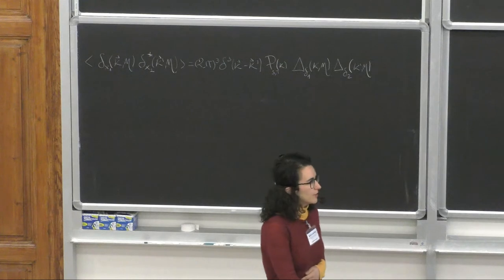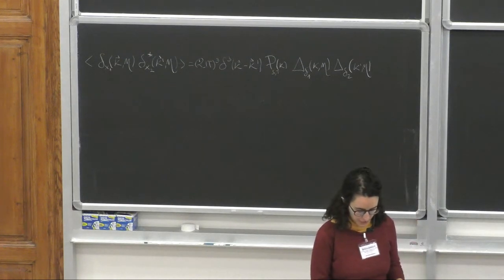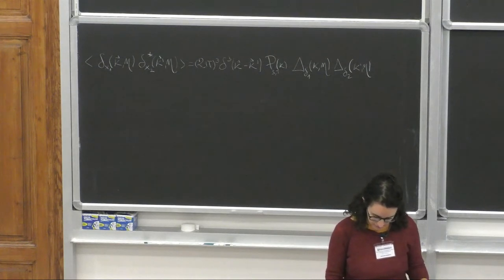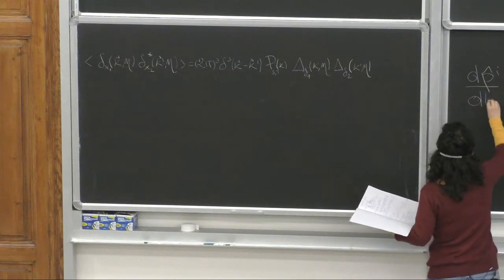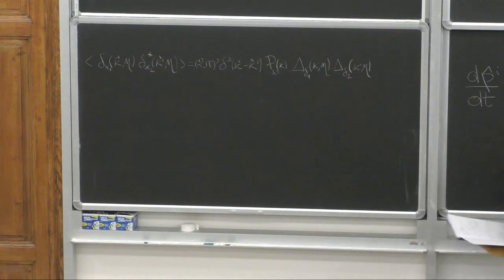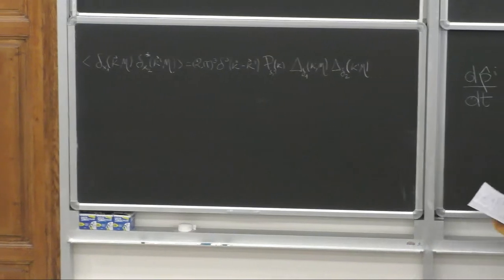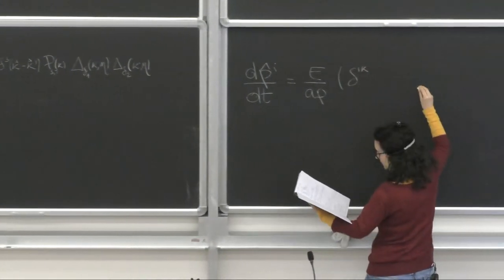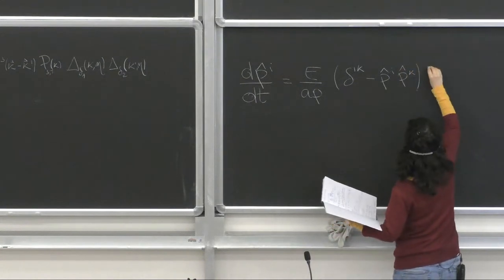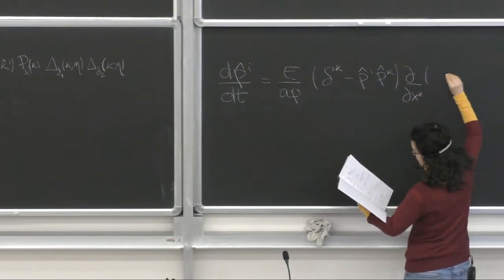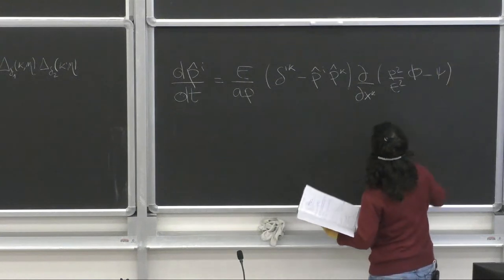Before we get started, let me go back to two things that arose yesterday. One was a question concerning the index of the term dpi_e over dt. As someone pointed out, there was a problem with the indexes that I used. The correct expression is the following one.